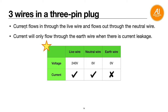Current flows through the live wire and flows out through the neutral wire. Current will only flow through the earth wire when there is a current leakage. In normal working conditions, there should be no current in the earth wire. The voltage of the live wire is 240 volts (high potential), the neutral wire is 0 volts, and the earth wire is always 0 volts. Memorize this - it is useful for MCQ questions.